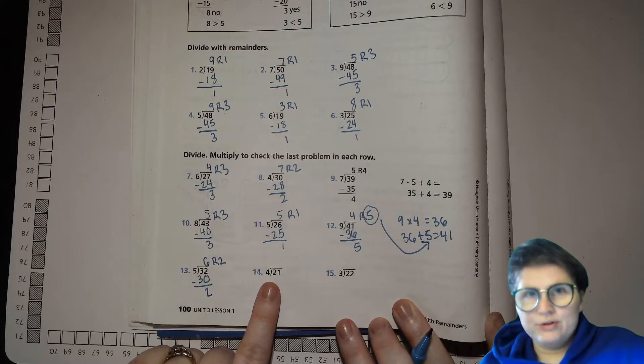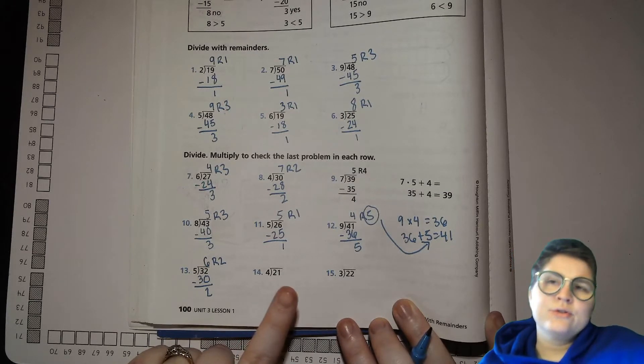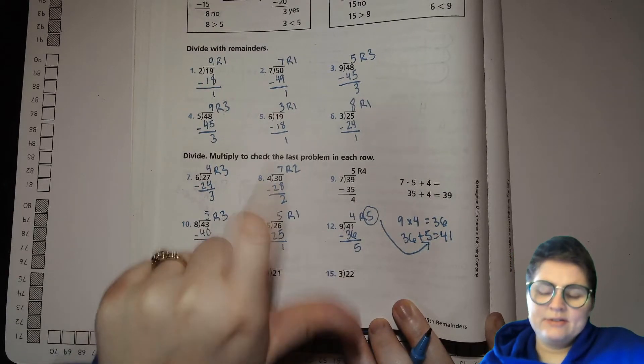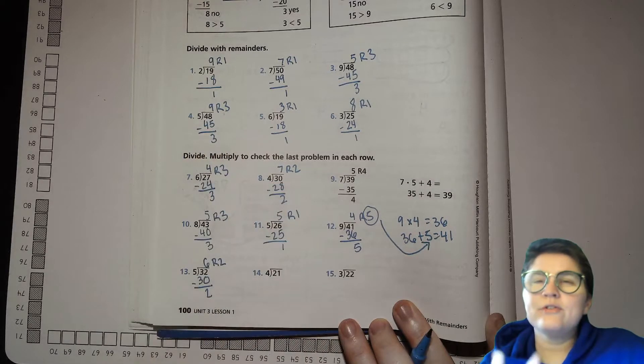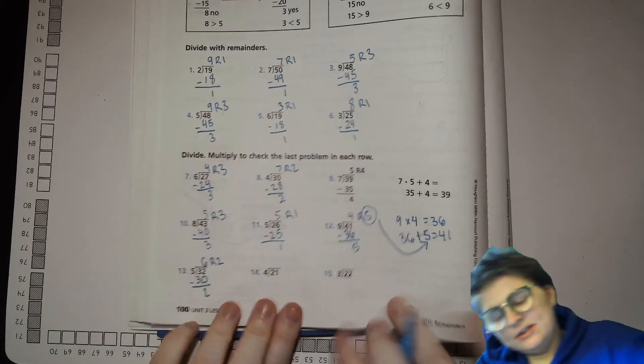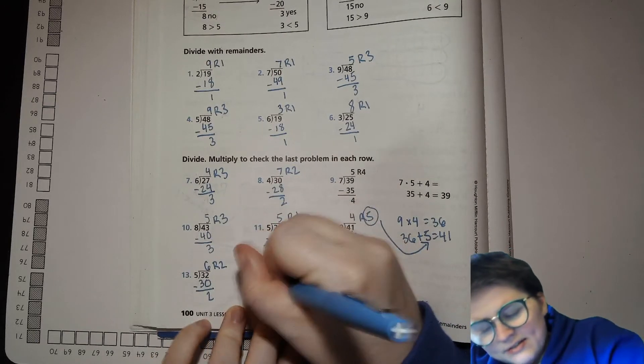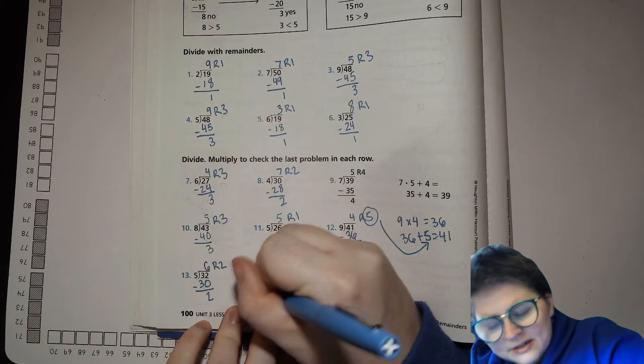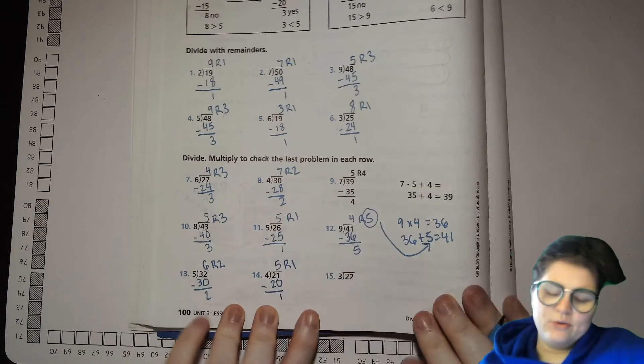21 divided by 4. I don't know. Hmm. 5? 4 times 5 is 20. That sounds perfect. 5 times 4 is 20. Find the difference. It's 1. You have 1 left over.